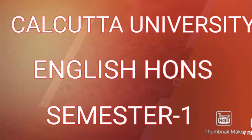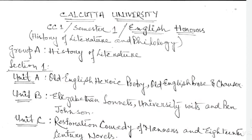For English Honours, one has to study the history of literature — that is, History of Literature has to be read. Along with that, Philology, meaning language study, since we are doing research on language — that is a separate stream. That also has to be studied. So first, let me explain how the paper is divided.